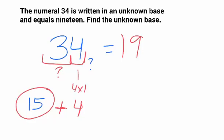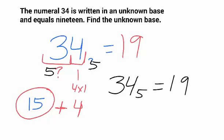So, that 3 must be counting for 15. So, what base would make it such that that 3 counts for 15, and it must be a 5. So, that's a 5s column, so that means that number is in base 5. And sure enough, 3, 4, base 5, adds up to be 19. So, the answer is that the unknown base is base 5.